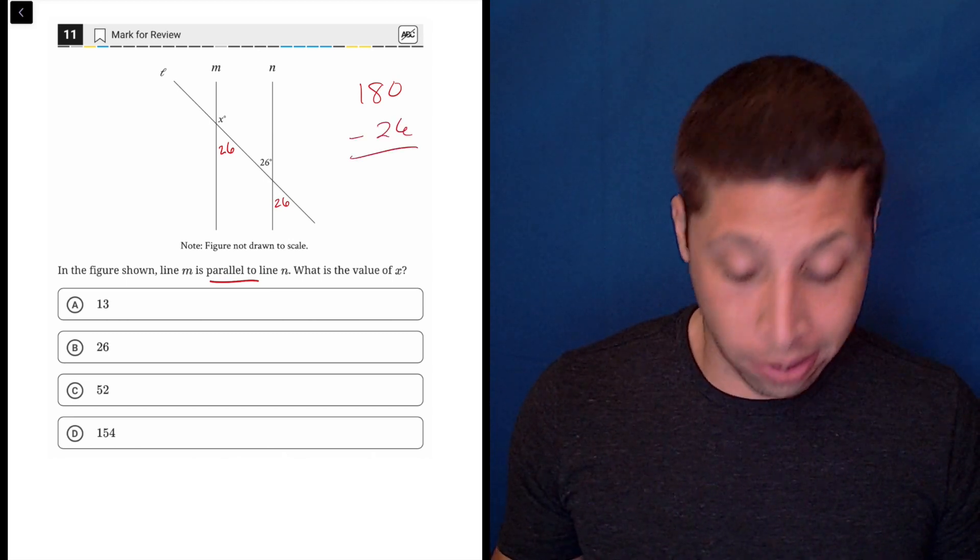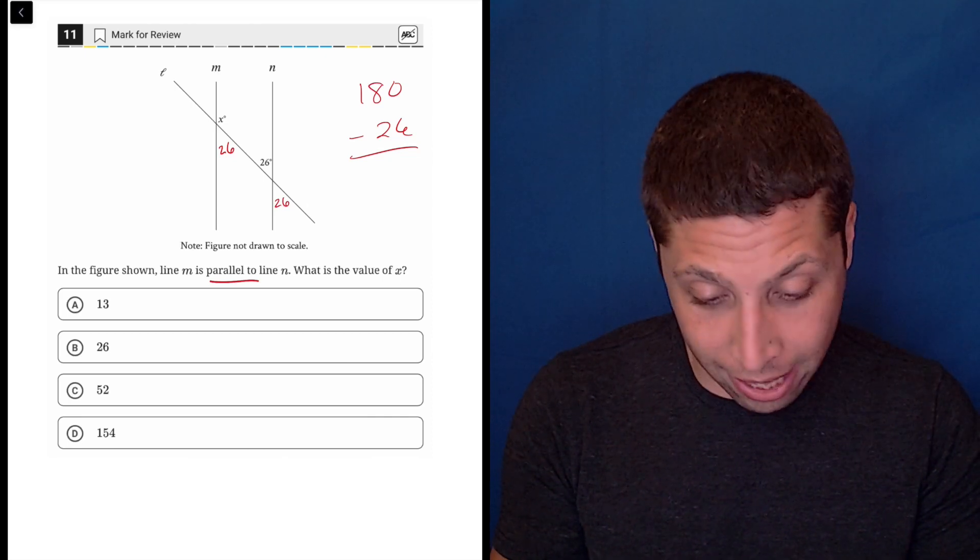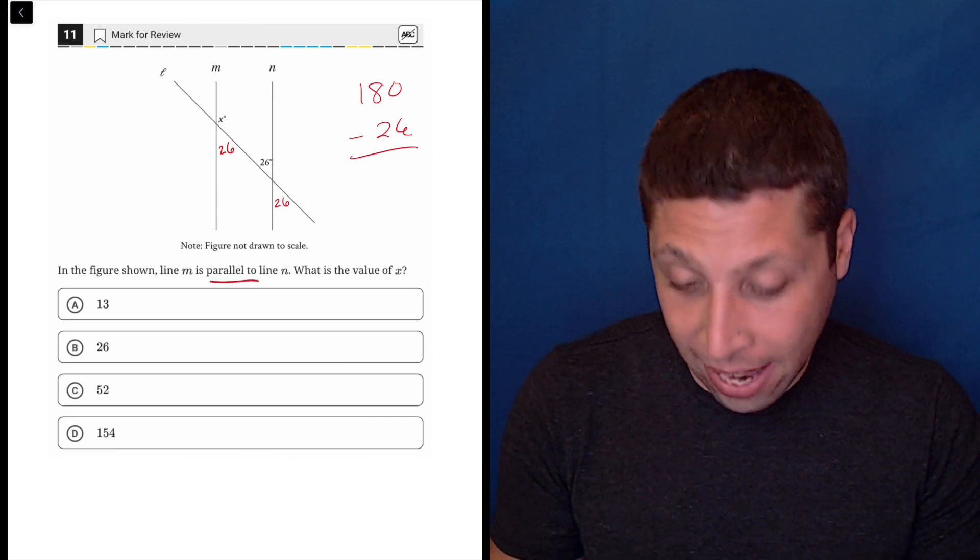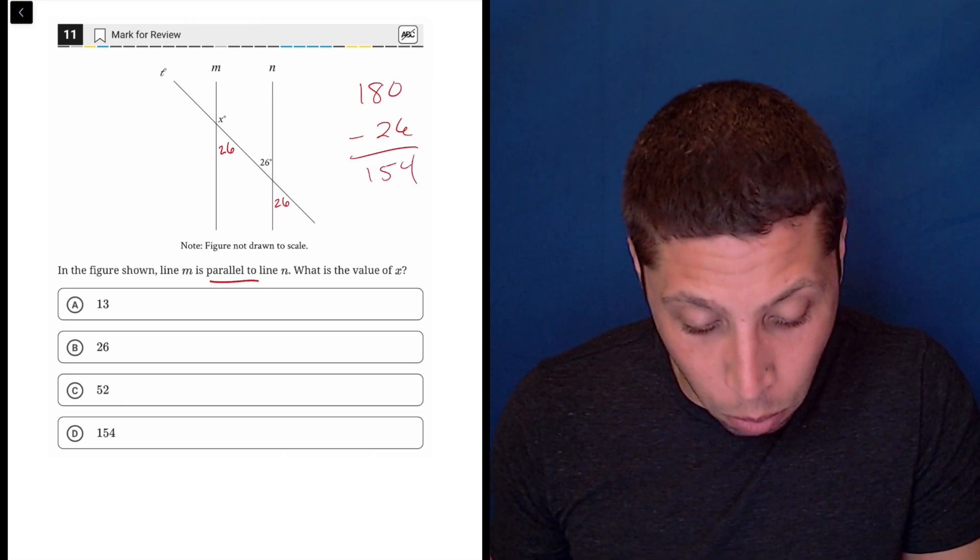That's going to give us the X value. You can probably even just look at the answers and notice there's only one that makes any sense here. 180 minus 26 is 154.